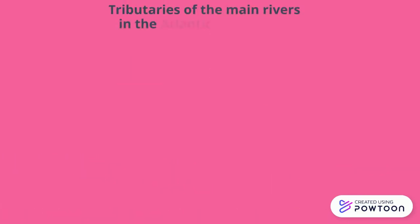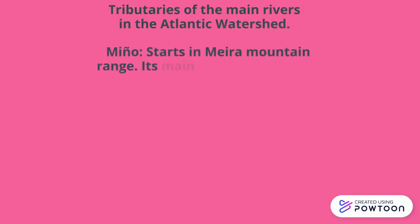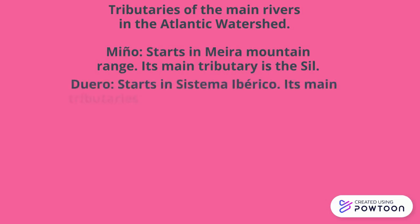Tributaries of the main rivers in the Atlantic watershed. Miño starts in the Meira Mountain Range; its main tributary is the Sil. Duero starts in the Sistema Ibérico; its main tributaries are Pisuerga, Esla, and Tormes.